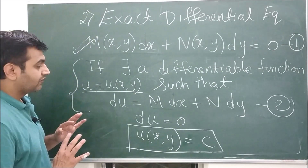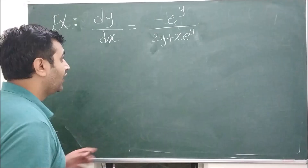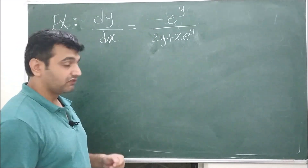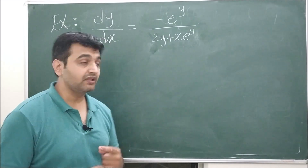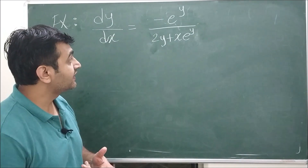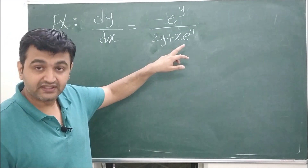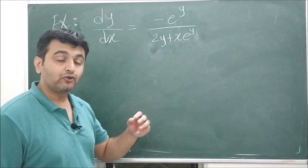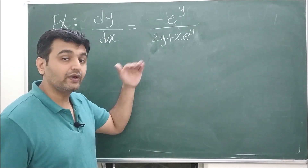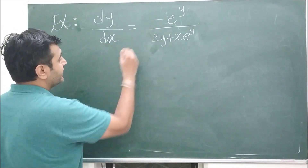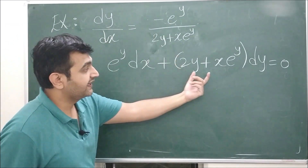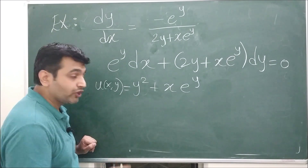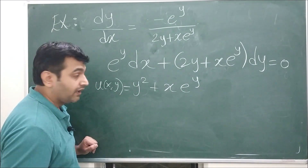Let's take an example so the concept is clearer. Given a differential equation, our job is to find the general solution. First, check whether variable separable applies — it doesn't, because we can't separate the variables. Second, can we use reduction to variable separable? No, because it's not homogeneous. So we try the third method. We rewrite it in the form M dx + N dy = 0, giving M = e^y and N = 2y + xe^y.